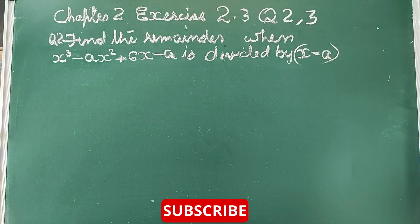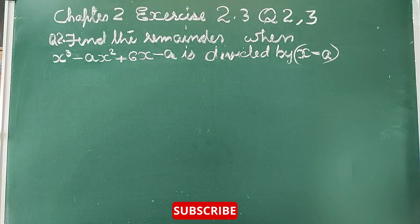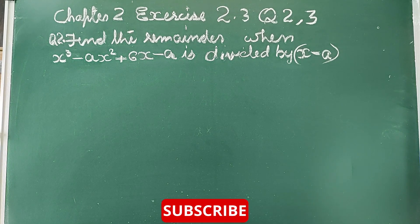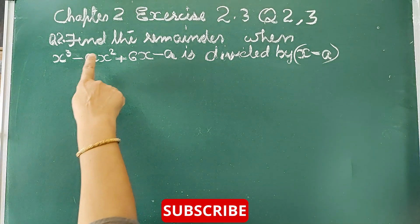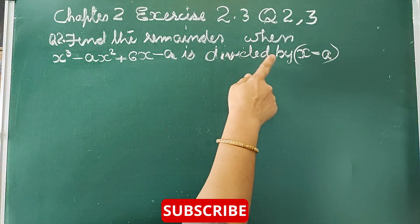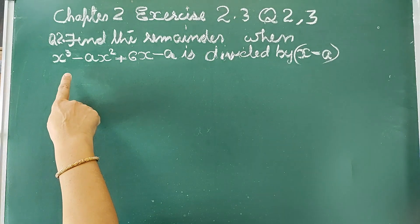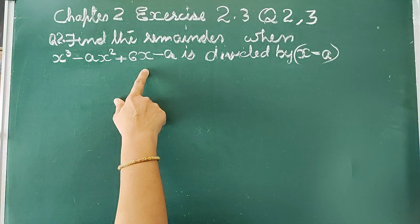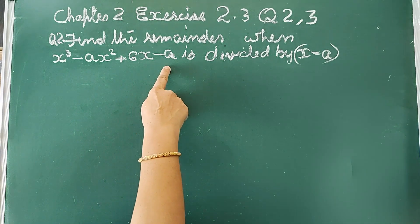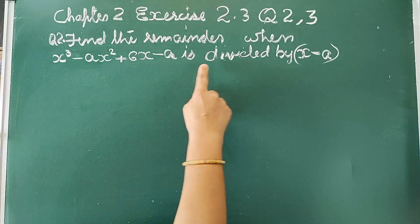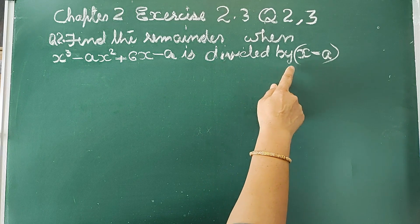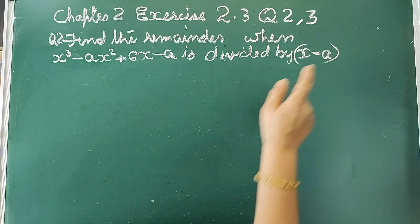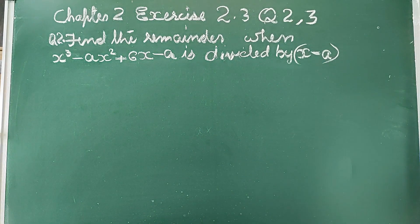Chapter 2, Exercise 2.3, Question No. 2. Find the remainder when x cubed minus ax squared plus 6x minus a is divided by x minus a.